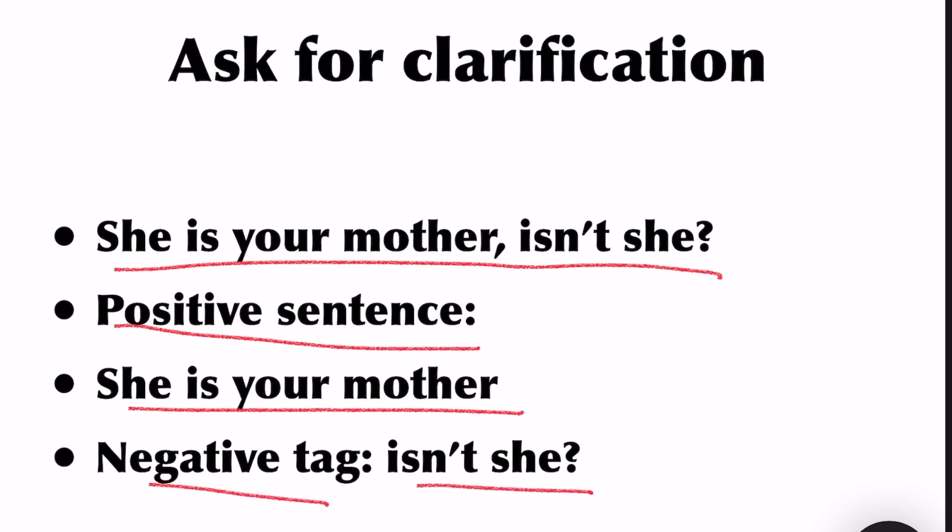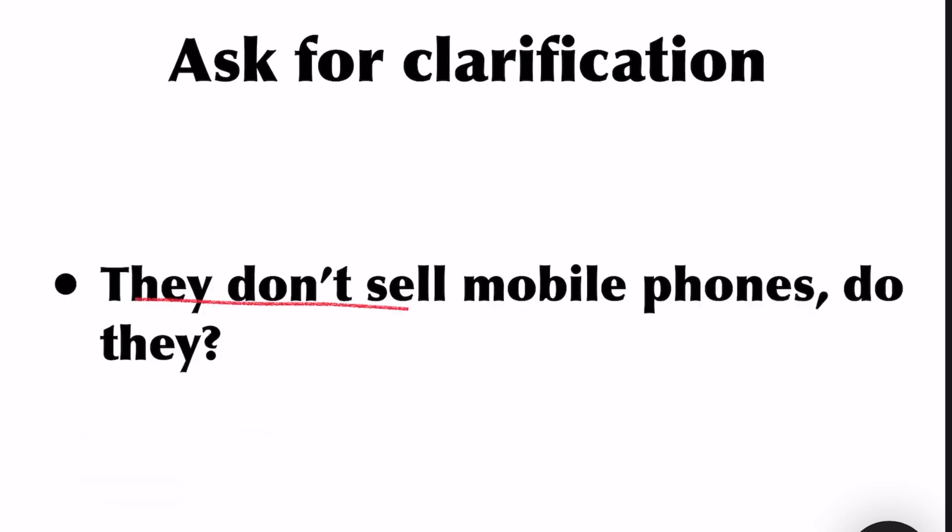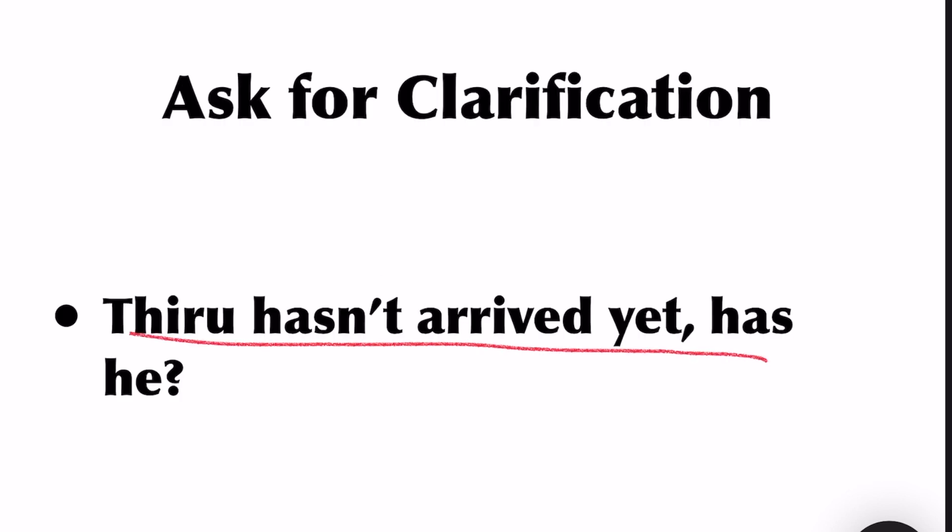The negative tag is 'isn't she?' Another example: Mina doesn't have children, does she? The negative sentence is 'Mina doesn't have children.' For this negative sentence, you must add a positive tag: 'does she?' More examples: They don't sell mobile phones, do they? Thiru hasn't arrived yet, has